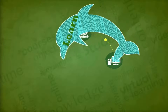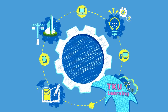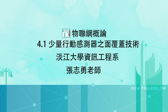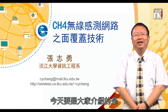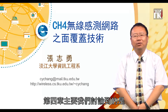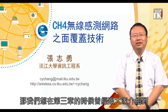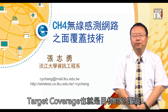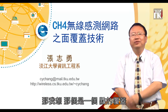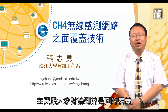各位同学大家好，今天要跟大家介绍的是无线感测网络里面的第四章。第四章我们主要讨论到的是面覆盖的技术，也就是Area Coverage。在第三章的时候曾经跟大家介绍到Target Coverage，也就是目标物的覆盖，那是一个点的覆盖。覆盖的技术有包括点线面，在这一章里面主要跟大家讨论到的是面的覆盖。